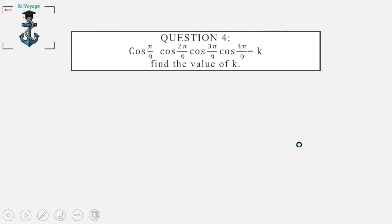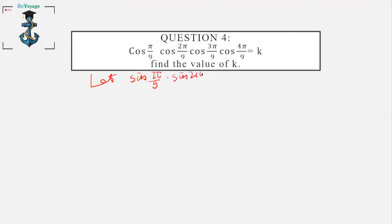Question 4: cos(π/9)·cos(2π/9)·cos(3π/9)·cos(4π/9) = k. We find k by creating an alternate sequence of sines: sin(5π/9)·sin(5π/9)·sin(5π/9)·sin(5π/9) = s, and then multiply k by s.